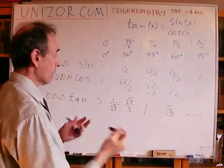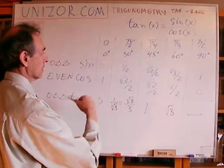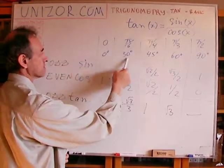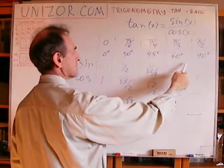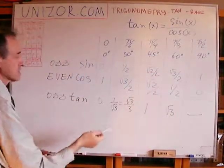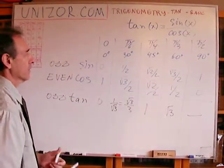Now, since it's odd, then we can calculate minus 30 degrees, minus 45, minus 60, or minus 90. We just reverse the sign, because it's an odd function.